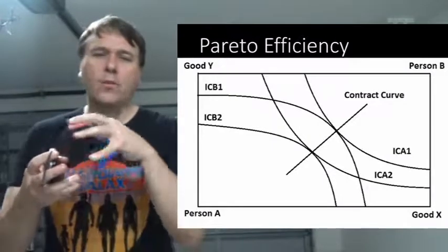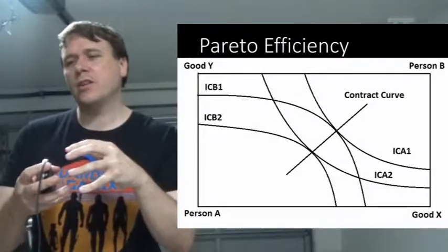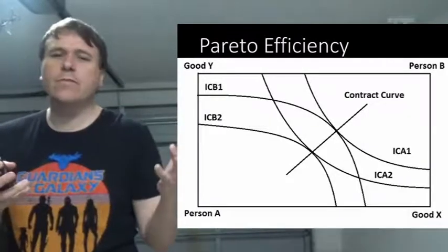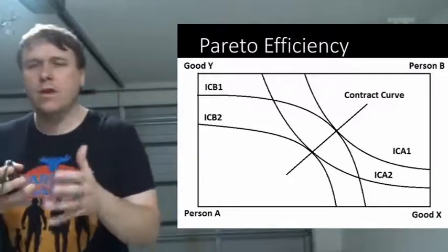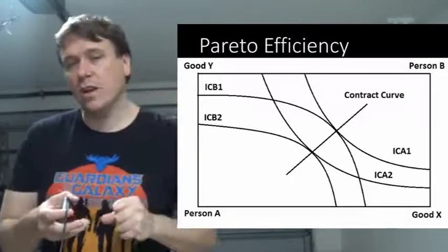So you're at that optimal point where, for example, you could have a situation where person A doesn't have to give up anything for person B to obtain something else. And that wouldn't be Pareto efficient, and that would fall somewhere else on those curves.